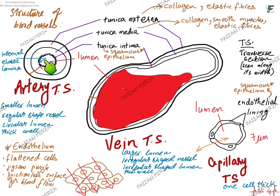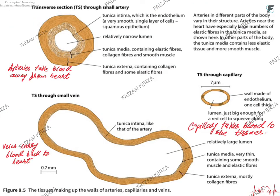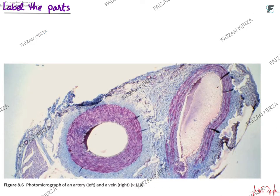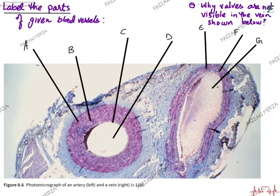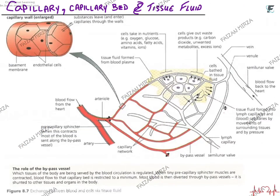Arteries carry blood away from the heart, veins carry blood toward the heart, and capillaries carry blood to the tissues. The artery lumen is normally fully filled with blood, whereas the vein is not always fully filled — that is why veins often appear collapsed.